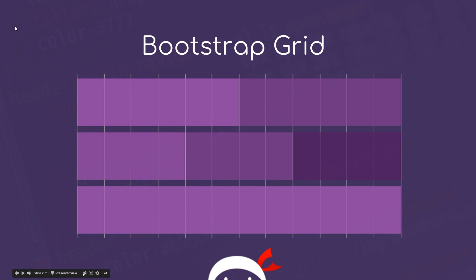The idea is that this is content in different rows on your web page going down the page. For example, we could have a row on our web page which is made up of two elements — a picture on the left and text on the right. We want to say to Bootstrap that we want each of these to be six columns in width, so Bootstrap splits these up into equal segments on the grid — one, two, three, four, five, six.